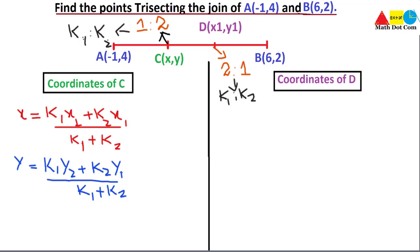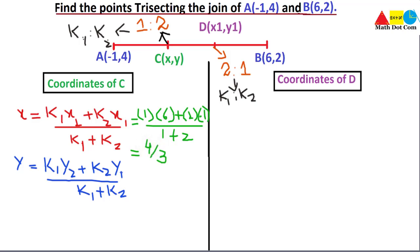Let's find the x-coordinate of point C by putting the values into the formula. k1 is 1 and x2 is the x-coordinate of point B, which is 6. k2 is 2 and x1 is the x-coordinate of A, which is minus 1, divided by k1 plus k2, that is 1 plus 2 equals 3, since the total parts of the line are three. Solving: 6 minus 2 equals 4, so we get 4 over 3. This is the x-coordinate of point C.